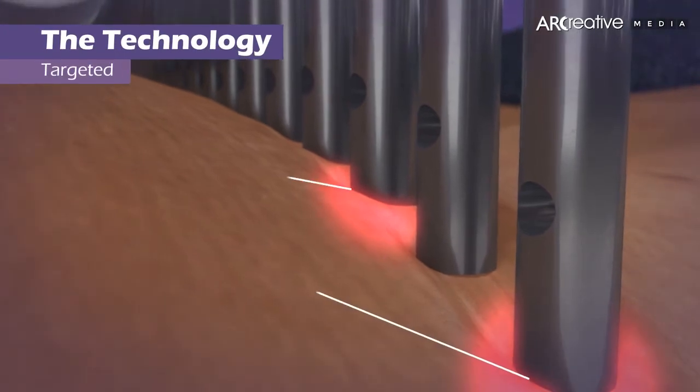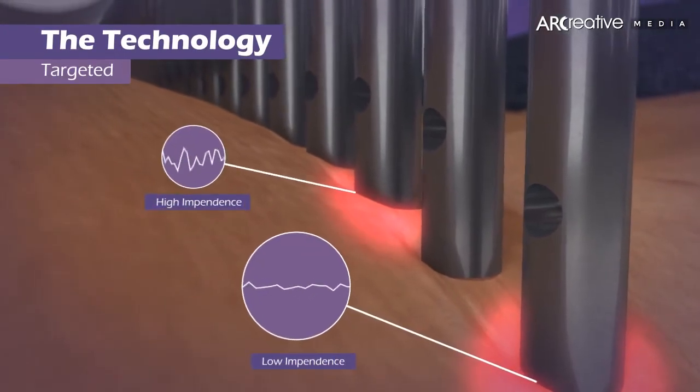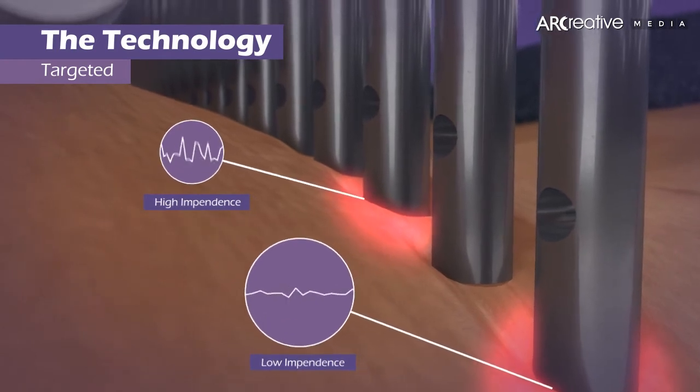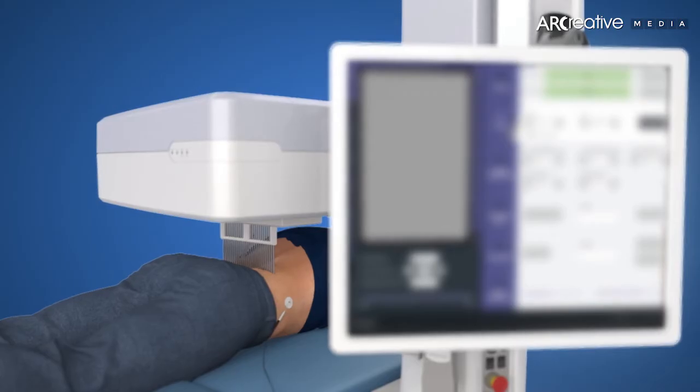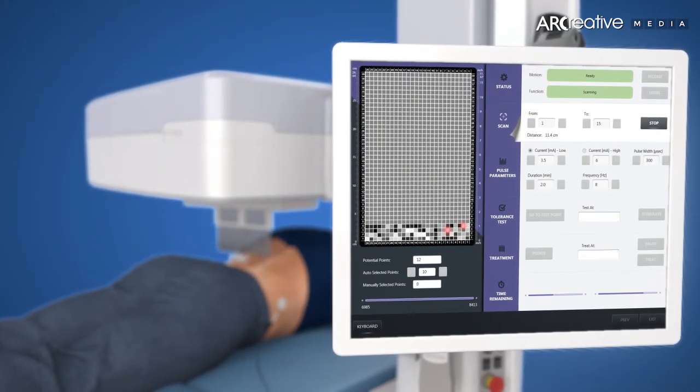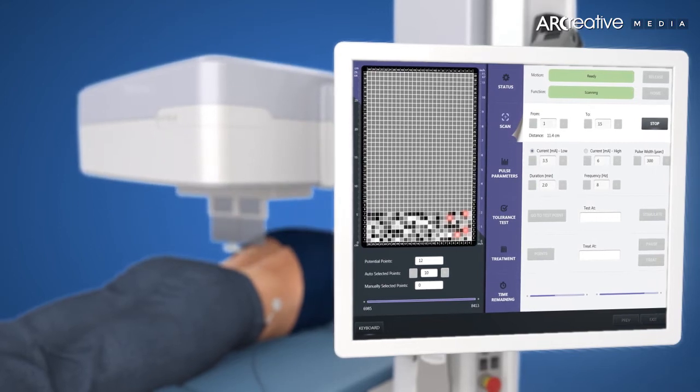Using an array of miniature probes coupled into an automatic robotic system, a two-dimensional image of skin impedance is generated. Soliv analyzes the data, identifies the active trigger points as potential locations and visualizes it on the impedance image.